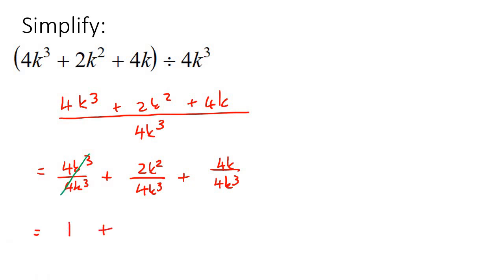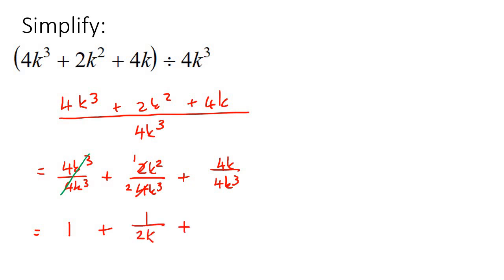Remember that when everything cancels, you're still left with a 1. For the next part, 2 goes into 4 two times, so you have 1 over 2. And if you have 2 k's at the top and 3 k's at the bottom, you'd have 1k left at the bottom — so you write 1 over 2k. For the last part, the 4s cancel. There's 1k at the top and 3 k's at the bottom, leaving 2 k's at the bottom, so you fill in a 1 on top. That's the final answer.